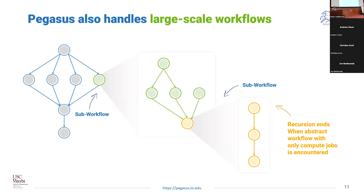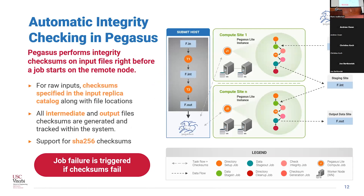Pegasus also has good built-in support for hierarchical workflows, where a node in the workflow can be another workflow itself. There have been a couple of talks this week about users using the SubDAG feature — this is heavily used by many large-scale users and Pegasus does a really good job managing data between sub-workflows. Pegasus also has support for automatic integrity checking: it generates checksums for the files which are generated and compares them at the destination point to make sure there is no corruption — errors get triggered if this happens.